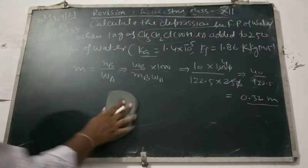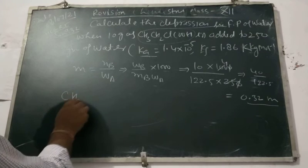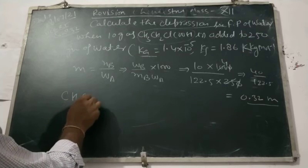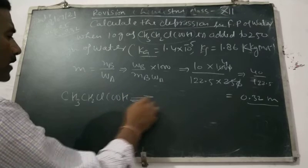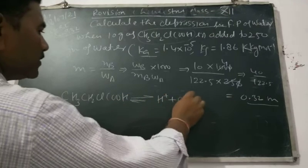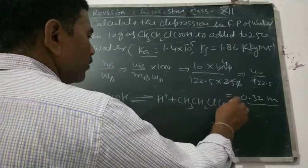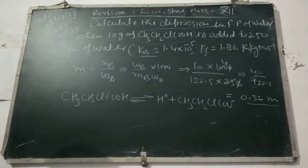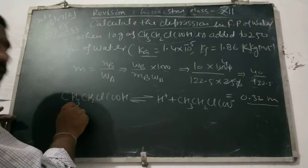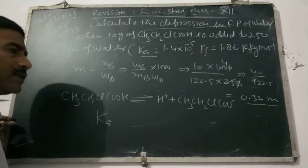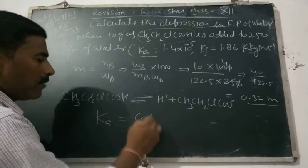उसके बाद α निकालने की कोशिश करेंगे। Alpha निकालने के लिए: 2-chloropropanoic acid CH3·CH2·Cl·COOH को जब ionize करेंगे तो H⁺ और CH3·CH2·Cl·COO⁻ मिलेगा। इसके लिए हम लोगों ने relation निकाल चुके हैं: dissociation constant of weak acid = C·α².